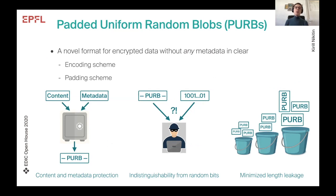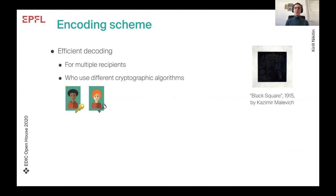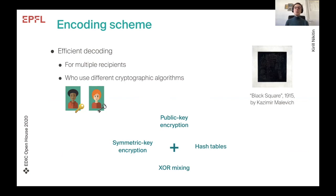The idea is that a padded blob would include both content and metadata, and would be indistinguishable from a random bit string to someone without the encryption key, as leakage via its length would be minimized. To enable creation of such PURBs, we designed two schemes: one for encoding and one for padding. The main challenge for the encoding scheme was decoding — specifically, how to make it efficient when you have no metadata in clear text, especially when sending the ciphertext to multiple recipients who may use different cryptographic algorithms. Our scheme uses a combination of symmetric-key and public-key encryption, and data structures like hash tables and XOR mixing to make it efficient for any number of recipients and cryptographic schemes.